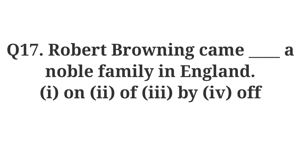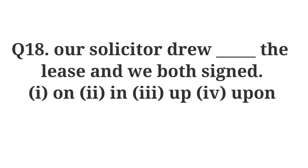Question number seventeen: Robert Browning came dash a noble family in England. Options are: on, up, by, off. This test is especially for Senior Cambridge, IGCSE, GCSE, ICSE, CBSE, all state and higher secondary boards — for everyone.